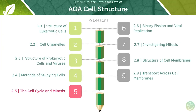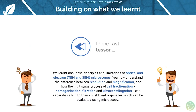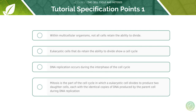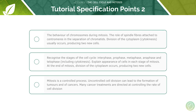This is the fifth video in our series of nine lessons on the topic of cell structure. In the last lesson we looked at microscopes and the processes involved in cell fractionation. Here are the key learning objectives for today's lesson. First we'll look at cell division and the cell cycle, then at the stages of mitosis, and finally at cancer. Here are the AQA learning objectives for this tutorial — feel free to pause the video and have a quick read through them before we begin.